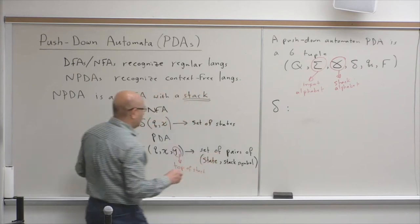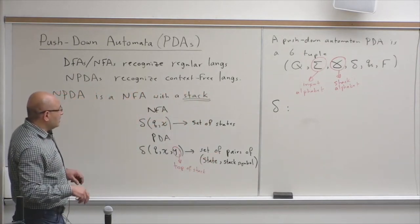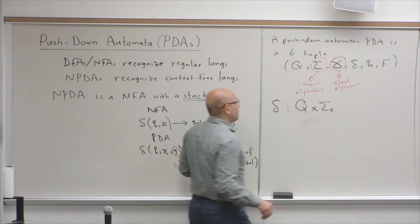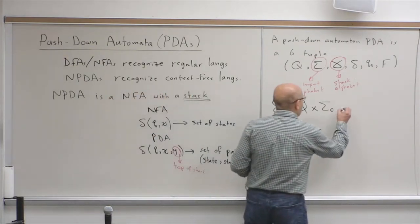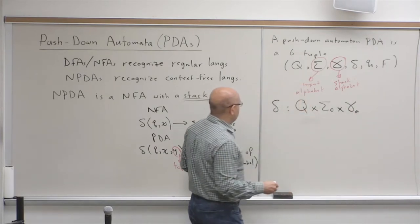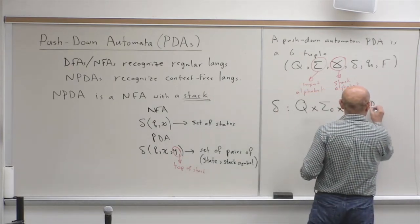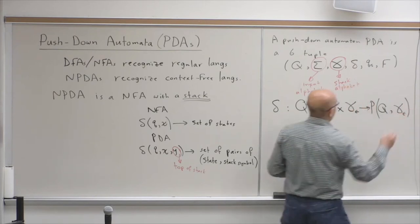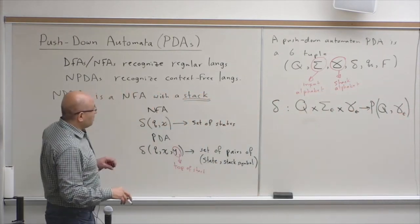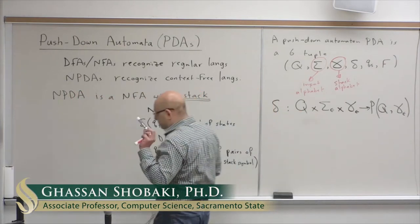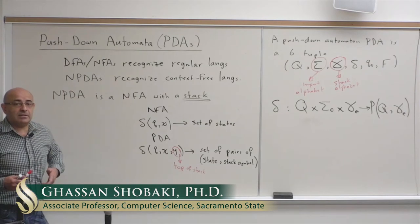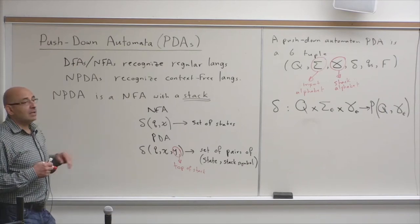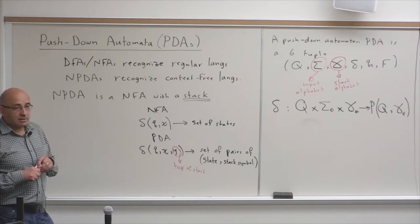So delta goes from Q times sigma-epsilon cross gamma-epsilon to the power set of Q and gamma-epsilon. We are adding the top of the stack to the picture. I promise that when we show the concrete example, all of this will make a lot more sense.